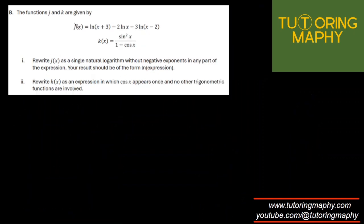Let's move on to the next part. Okay. Once again, g is this, k is this. So they are asking us to rewrite j as a single natural logarithm. Natural logarithm, mind it. Ln. Without negative exponents in any part of the expression, your results should be of the form Ln expression. Okay. All right. Question is on properties of logs, guys.